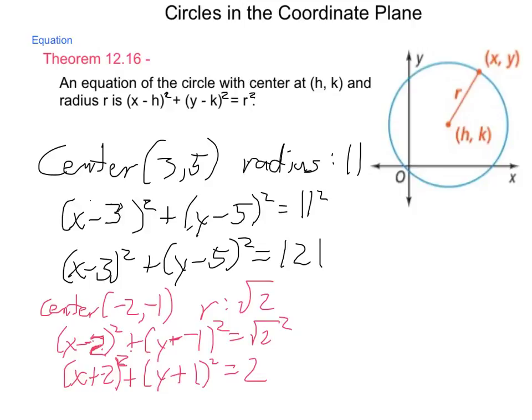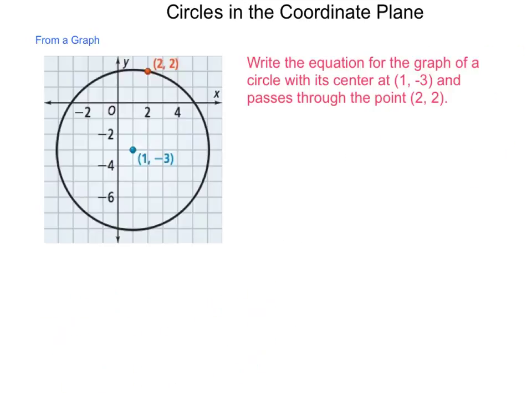So, what else can we do with this? Well, what happens if we're shown a graph? How do we change that visual form into an equation that we can work with? Here, we need to write the equation for a graph that's at the center at (1, -3), and passing through the point (2, 2).